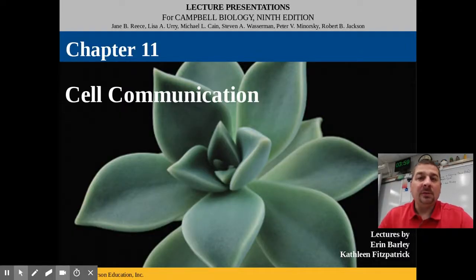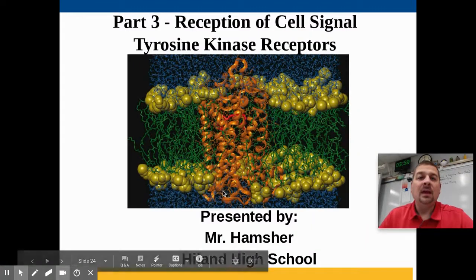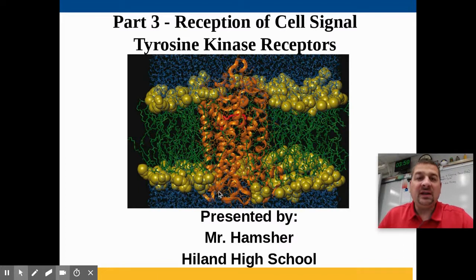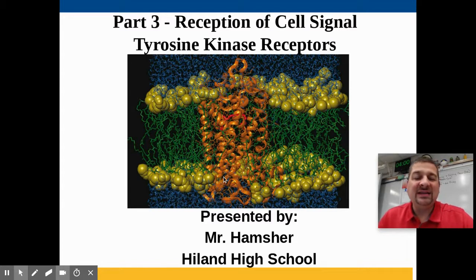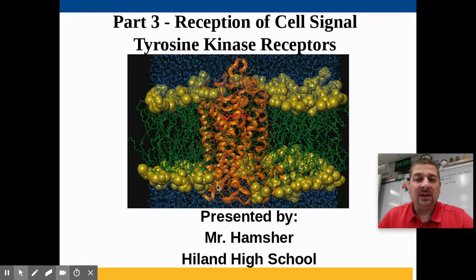Hey, Hemi here with part three, which is a continuation of our look at cell communication and how some cells signal other cells. This is part three of the video series where we are looking at the reception of cell signals. In this video we want to look at tyrosine kinase receptors or TKRs and also ion channel receptors. This is taken from Campbell Biology, where a majority of these notes and slides come from.